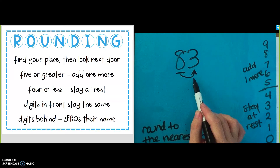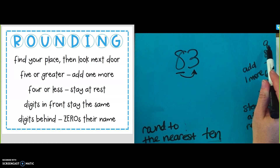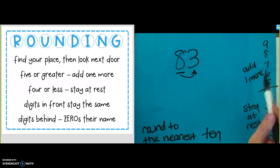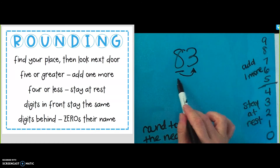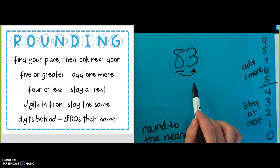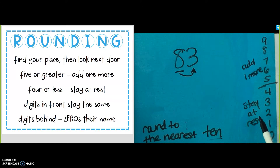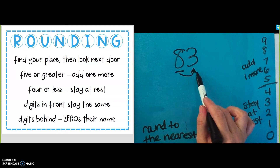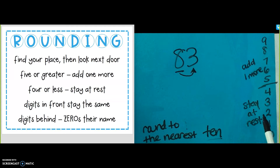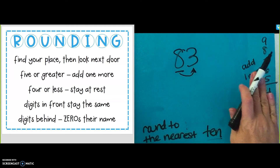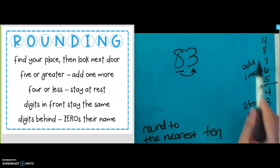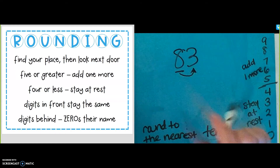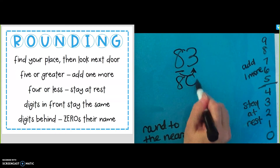5 or greater — if the number next door is 5, 6, 7, 8, or 9 — add one more. So if this number over here is 5 or greater, I'm going to add one more to this 8 to round it to 90. If it is 4 or less, you stay at rest, which means we leave that number the same and we don't change it. This number is not 5 or greater; it is 4 or less. So this number is going to stay at rest. The 8 stays, and I'm going to round it to 80.